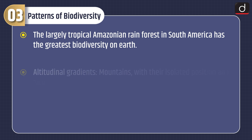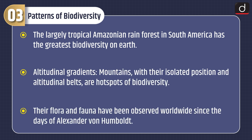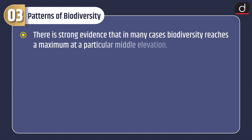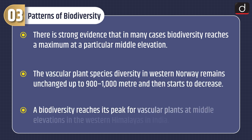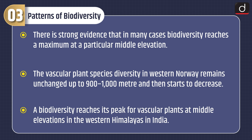The largely tropical Amazonian rainforest in South America has the greatest biodiversity on Earth. Regarding altitudinal gradients, mountains with their isolated position and altitudinal beds are hotspots of biodiversity, observed worldwide since the days of Alexander von Humboldt. In many cases, biodiversity reaches a maximum at middle elevations. For example, vascular plant species diversity in western Norway remains unchanged up to 900–1000 meters and then decreases, while in the western Himalayas in India, biodiversity peaks for vascular plants at middle elevations.